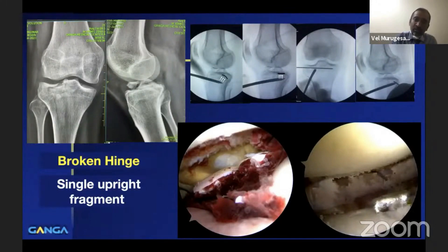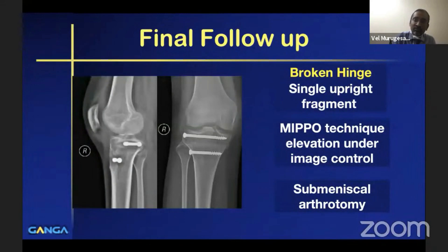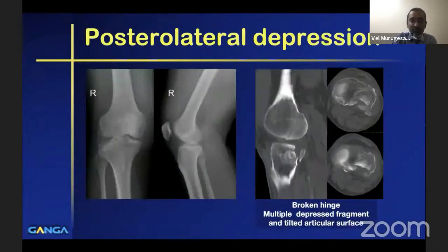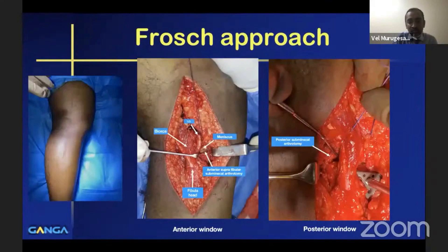Elevation under direct visualization is usually done by submeniscal arthrotomy. This patient also needed an ACL avulsion suture pullout repair, so arthroscopy was also performed. For broken hinge elevation, minimally invasive technique under direct visualization — mostly done by submeniscal arthrotomy — is preferred.